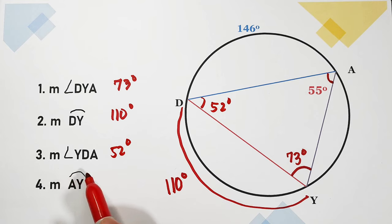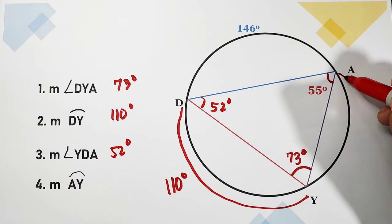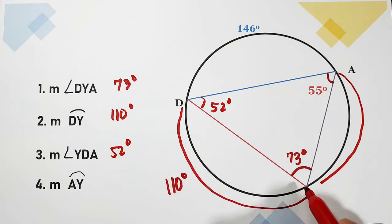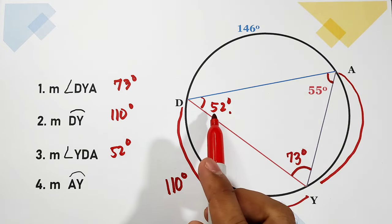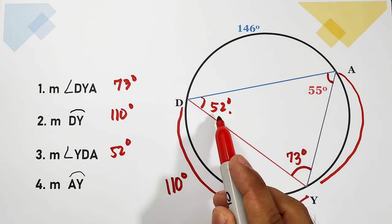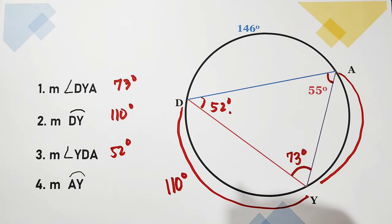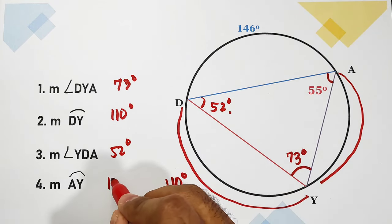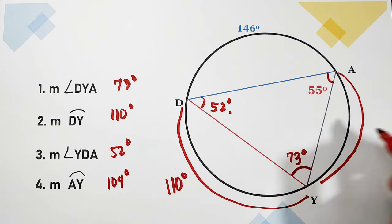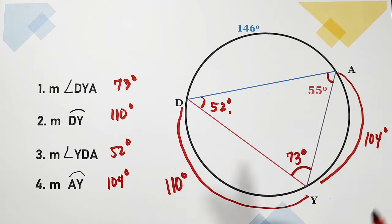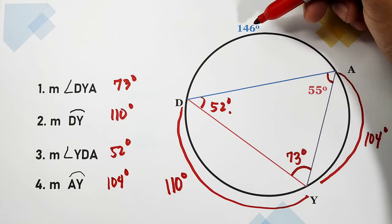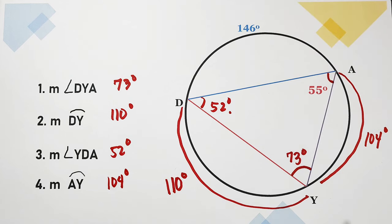Last, we are looking for arc AY. Arc AY is the intercepted arc of angle YDA, which is 52 degrees. Since the angle is one half of the arc, twice of 52 equals 104 degrees. If you add 104, 110, and 146, that equals 360 degrees.